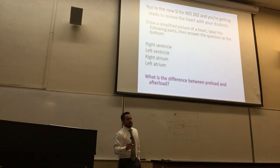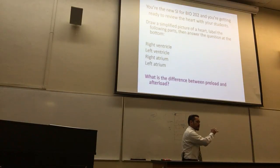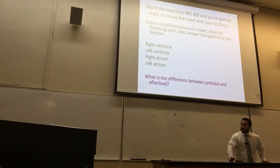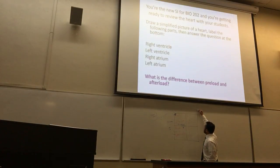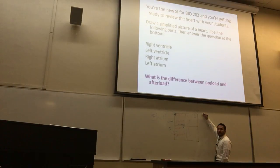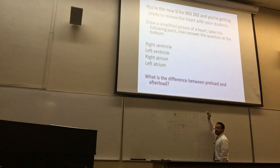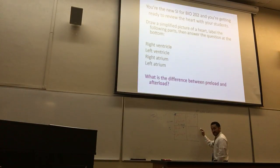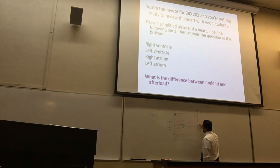From the lungs, where does it go? It has gas exchange at the lungs — we just covered the respiratory system last week. It comes back and goes to the left atrium. What vessel brings it to the left atrium? The pulmonary vein. Then it comes through a valve right here — which valve is this? Mitral, otherwise known as bicuspid — both are correct.